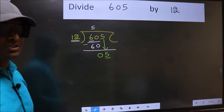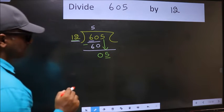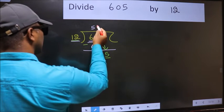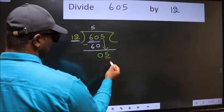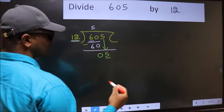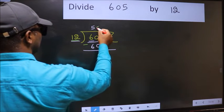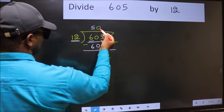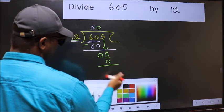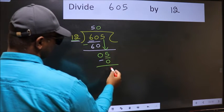Instead, what you should think of doing is, which number should we take here? If I take 1, we will get 12, but 12 is larger than 5. So what we should do is, we should take 0. So 12 into 0, 0. Now we should subtract. 5 minus 0, 5.